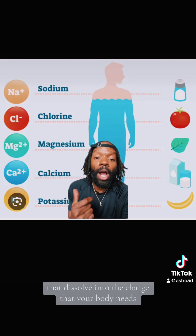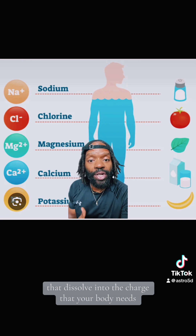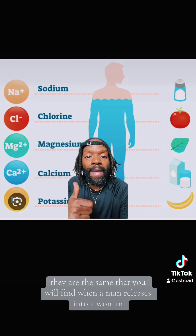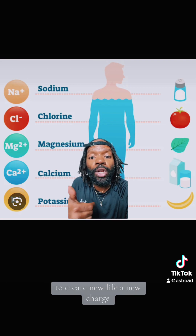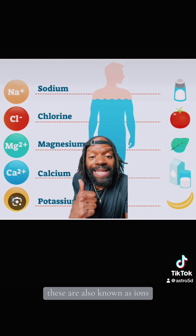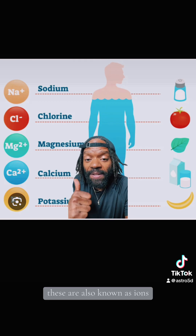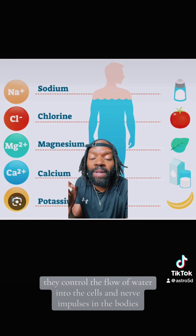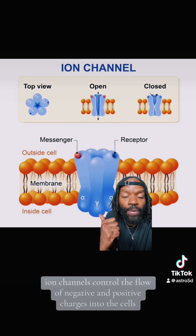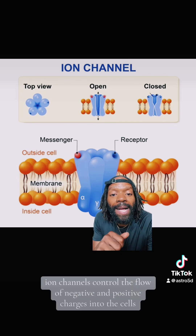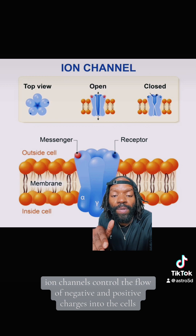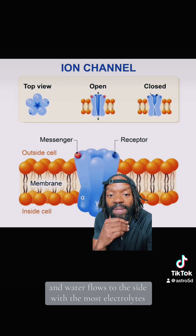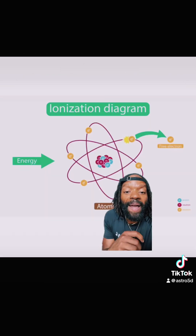Notice that these electrolytes dissolve into the charge that your body needs — they are the same that you will find when a man releases into a woman to create new life, that new charge. These are also known as ions. They control the flow of water into the cells and nerve impulses in the body. Ion channels control the flow of negative and positive charges into the cells, and water flows to the side with the most electrolytes. Osmosis. Ionization.